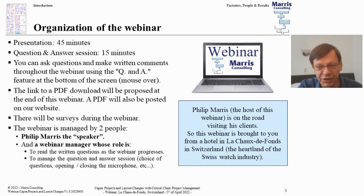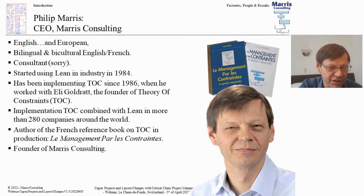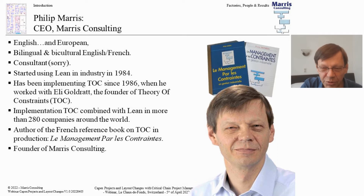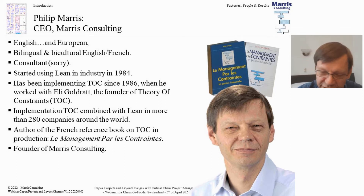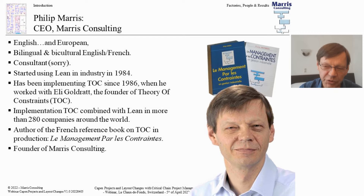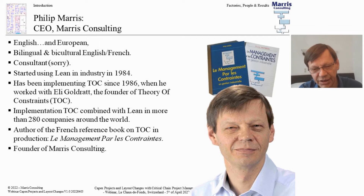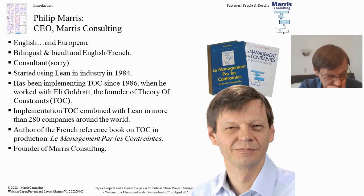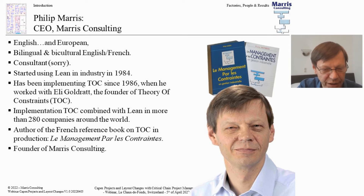For those who might not know me, my name is Philip Maris, I'm English, I consider myself European, I'm bilingual, I live in Paris. I began my lean journey in 1984, and a little bit later I discovered the theory of constraints, and I've been mixing those two things together to improve the performance of organisations over 30 years, in 280 companies, in over 30 countries. I'm the author of a French book about applying theory of constraints in factories, and I founded Maris Consulting.